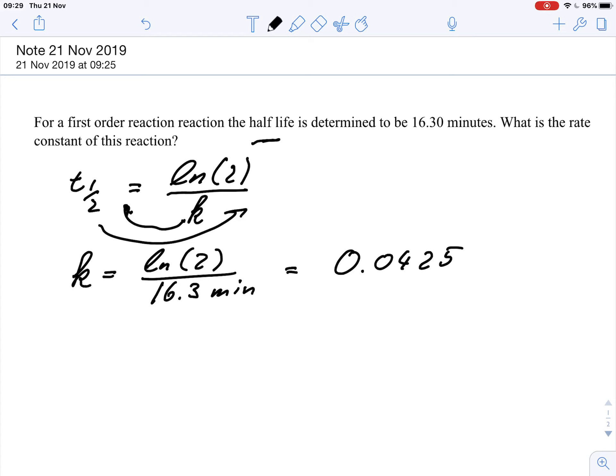The unit is minute to the power of minus 1. This makes sense because we know that a rate constant for a first-order reaction is always 1 over time.